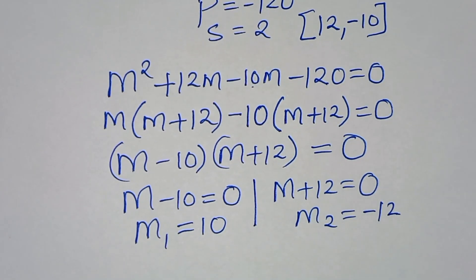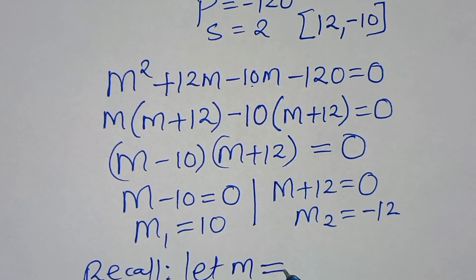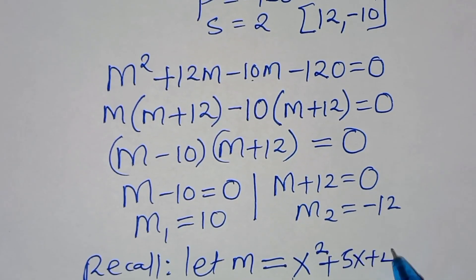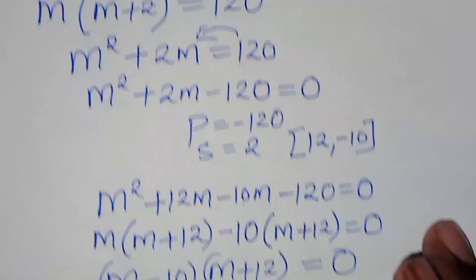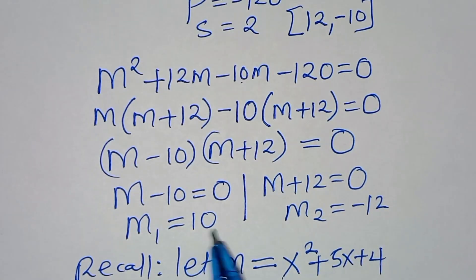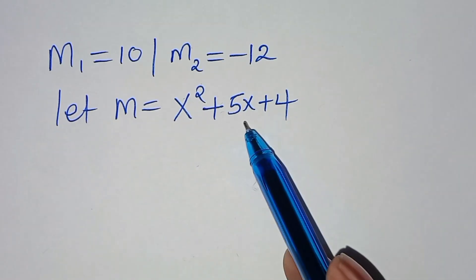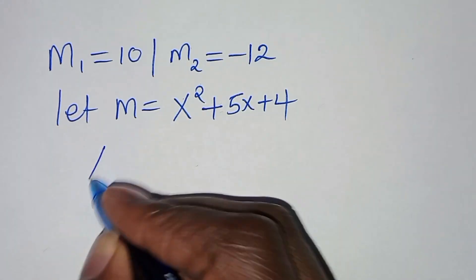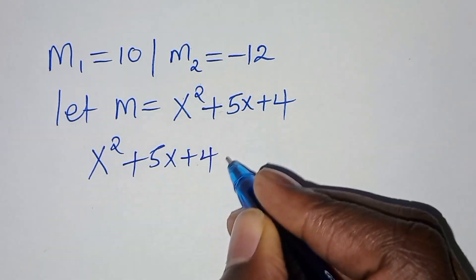Recalling that m = x²+5x+4, starting with m₁=10 we have x²+5x+4 = 10.